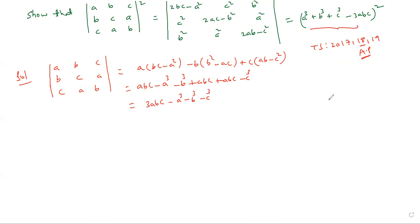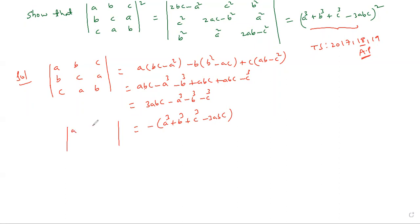Almost all terms we got but the order is different. To get the correct RHS order, take minus common — you can write minus of (a cubed plus b cubed plus c cubed minus 3abc). So the determinant of [a,b,c; b,c,a; c,a,b] equals this.